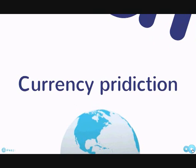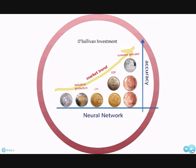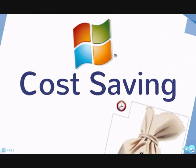Another example of applying neural network to successful predictions is in the currency market. Sullivan Investments created an AI in finance. They trained their network by asking the right questions such as what the market is likely to take off, what's the GDP of that country, or how economic indicators influence the currency. The more variables they incorporated into the network, the better accuracy they derived from it.